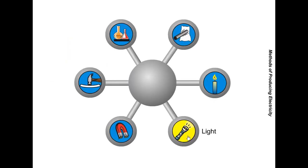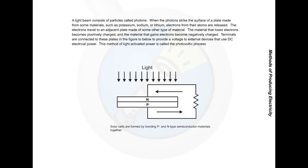Light. A light beam consists of particles called photons. When the photons strike the surface of a plate made from some materials, such as potassium, sodium, or lithium, electrons from their atoms are released. The electrons travel to an adjacent plate made of some other type of material. The material that loses electrons becomes positively charged, and the material that gains electrons becomes negatively charged. Terminals are connected to these plates, as shown here, to provide a voltage to external devices that use DC electrical power. This method of light-activated power is called the photovoltaic process.